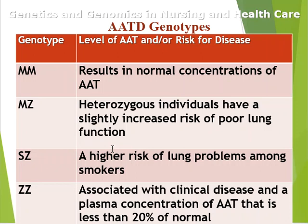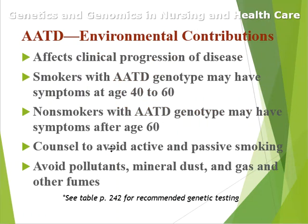There's a table that lists the genotype and what results in varying degrees of disease. Environmental contributions to alpha-1 antitrypsin deficiency affect the clinical progression. Smokers with the deficiency genotype may have symptoms at age 40 to 60, while non-smokers may prolong symptoms until after age 60. It's important to counsel people on their risk and to avoid active and passive smoking, as well as pollutants, mineral dust, gas, and other environmental fumes. Page 242 has a table of recommendations for genetic testing.